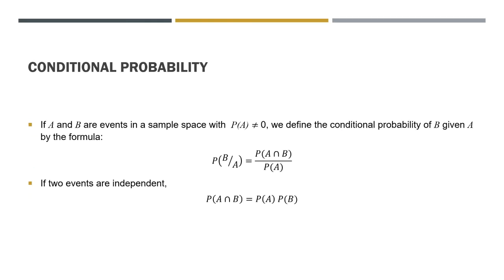If A and B are events in a sample space with P(A) not equal to zero, we define the conditional probability of B given A by the formula: P(B|A) is equivalent to P(A∩B) all over P(A). Our keyword here is 'given that.' So if two events are independent, we can say that P(A∩B) is equivalent to P(A) times P(B).